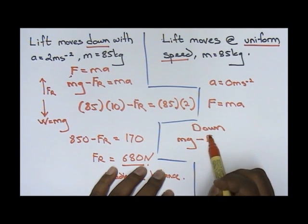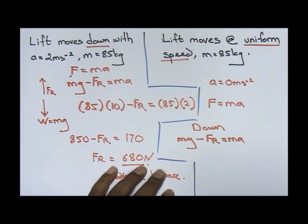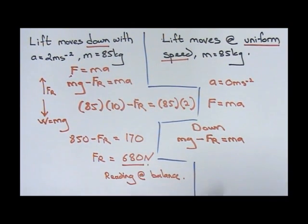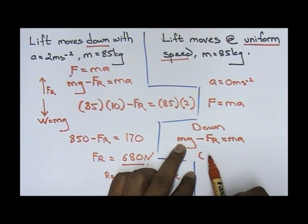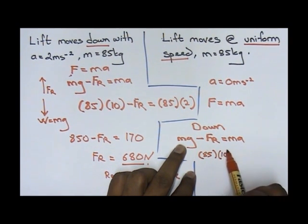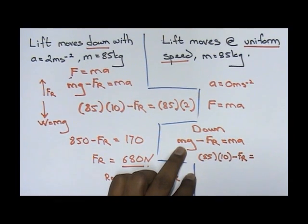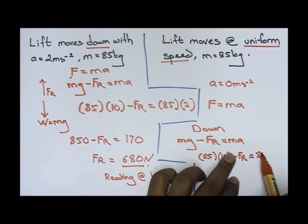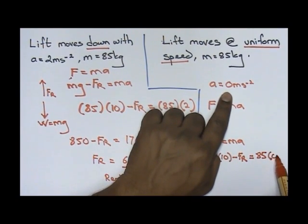If the lift is moving up it's the other way around: FR minus mg equals to ma. Now mg, your m is 85, gravity is 10, FR is what we don't know, your m is 85, acceleration, remember if it's uniform speed, zero.